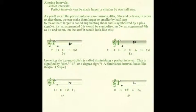As you'll recall, all the perfect intervals are unisons, fourths, fifths, and octaves. In order to alter them, we can make them larger or smaller by a half step. To make them larger is called augmenting them, and is symbolized by a plus sign. You can see that all I've done is taken the top note, which is the G, and moved it up a half step by making a G sharp. And that would sound like this.